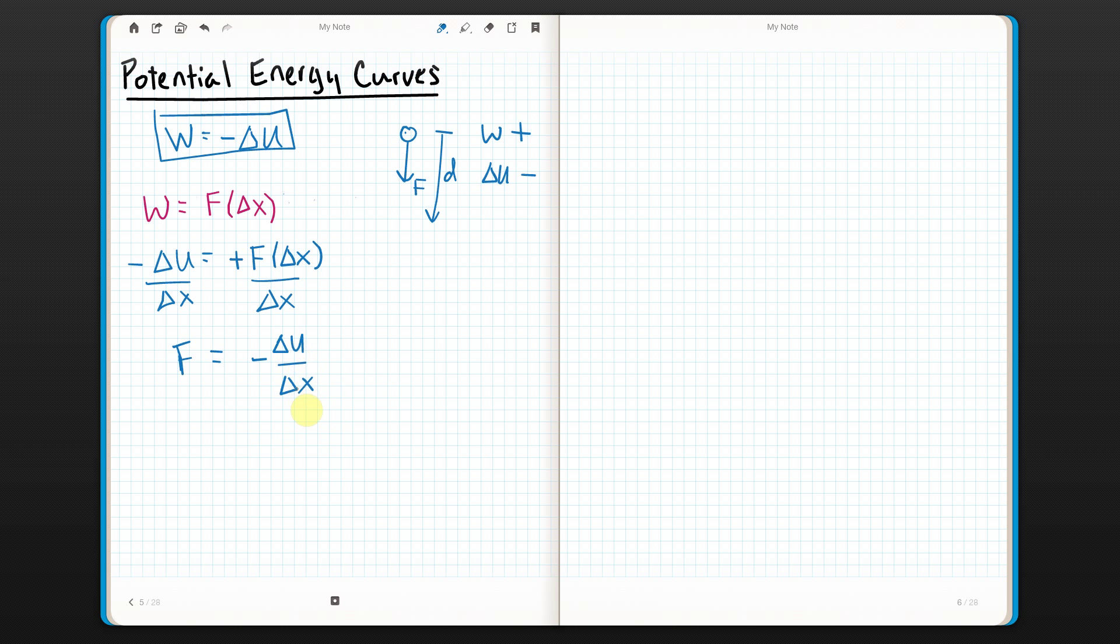What I get is f equals negative change in potential over change in x, F = -ΔU/Δx. Now, here's the thing. Delta means change. So this would be an average force. And the average force is the negative change in potential energy over the whole movement divided by the entire distance it was moved, or displacement it was moved. Now, if I instead say, hey, let's not do averages. Let's make this delta, this change, smaller and smaller and smaller until we've got infinitesimal little steps. Well, that's a differential.